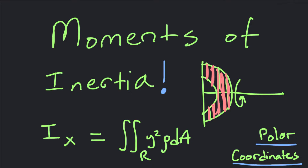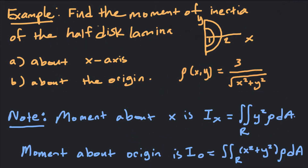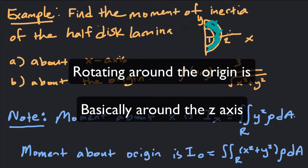Let's look at an example. Our example says: find the moment of inertia of the half disc lamina. We want to find the moment of inertia of that lamina about, first of all, the x-axis — so how hard or easy is it to get this thing rotating around the x-axis?